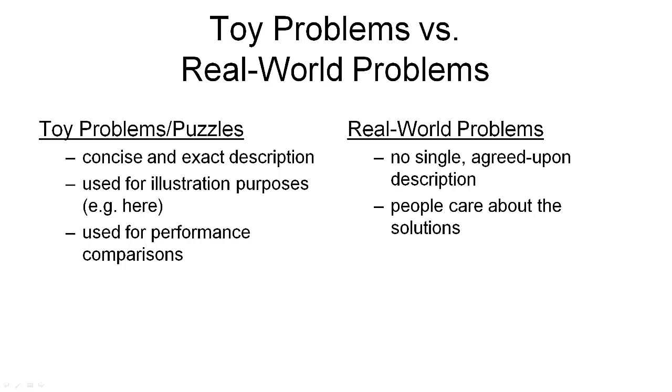Before we go into the details of search algorithms, I want to briefly talk about the types of problems we will see on this course: toy problems versus real world problems. Toy problems are characterized by a description that is concise and exact. The description being concise allows me to describe the problem in one slide and quickly. The description being exact means there shouldn't be too much ambiguity about what the problem is trying to do.